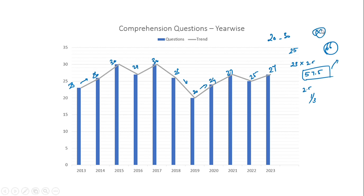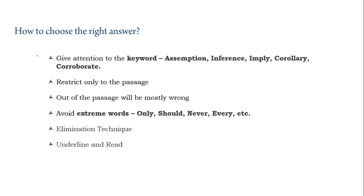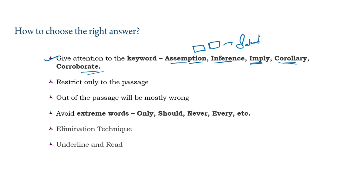How to choose the right answer? Give attention to keywords like assumption, inference, imply, corollary, and corroborate. I have divided our reading comprehension class video into two parts. In this video we will see assumption, inference, and imply. In the next video we will see the remaining two — corollary and corroborate — and with that we will complete our reading comprehension class.